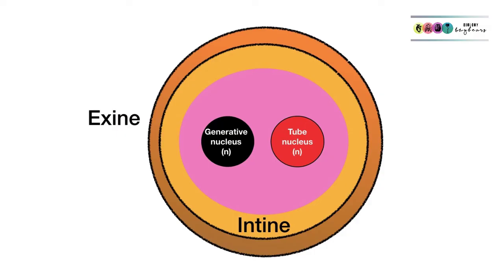So this is the pollen grain that you end up with. It has those two haploid nuclei, the tube nucleus and the generative nucleus. It has an inner coating known as the intine and an outer coating known as the exine.